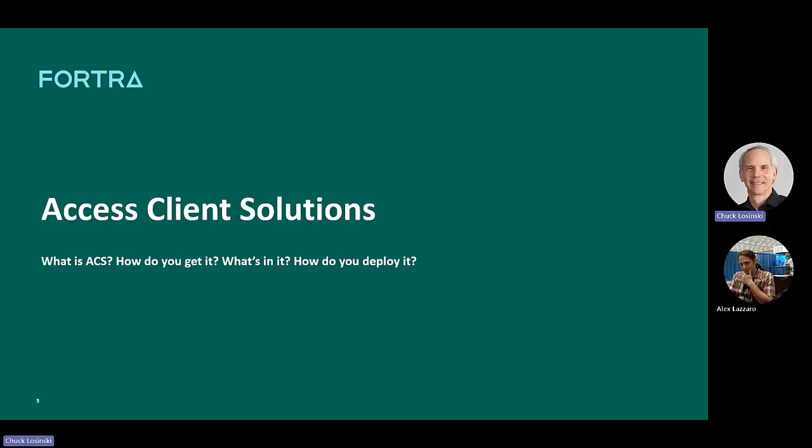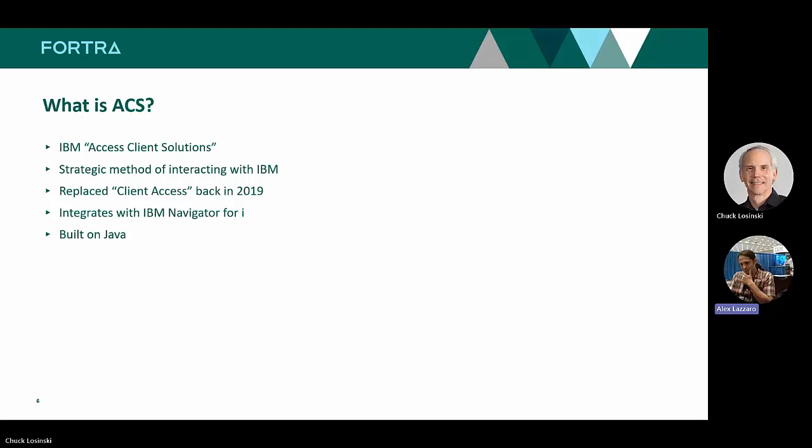Alex will now cover the basics. ACS stands for Access Client Solutions, and it has been the strategic method for interacting with IBM i since 2019. It replaced Client Access and also iSeries Navigator, which was an excellent tool used by everyone. ACS runs on Java, meaning it runs on every operating system, and it's integrated with IBM Navigator for i, which runs on a web server.